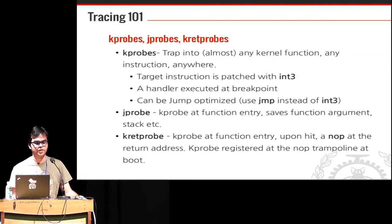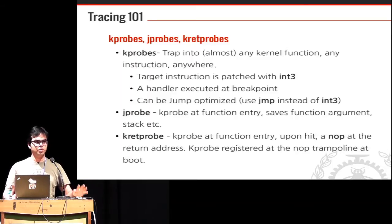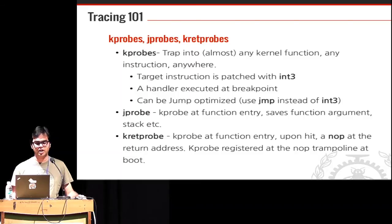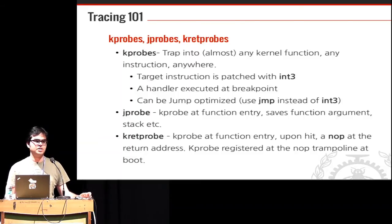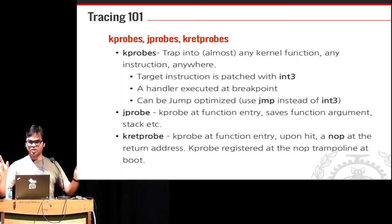Dynamic tracing approaches use kprobes and jprobes. kprobes let you trap into almost any kernel function — the target instruction is patched with an interrupt, and you have a handler where you can gather data. You can optimize this with jump optimizations instead of trapping every time. jprobes work similarly.